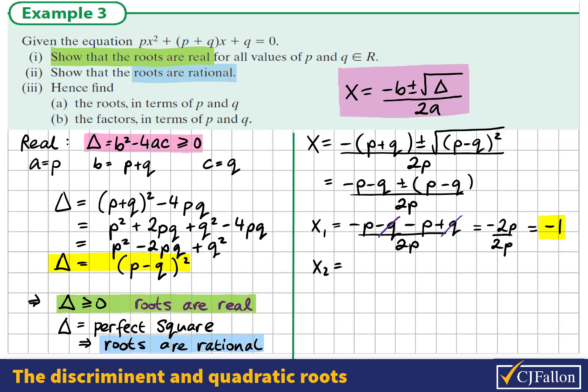The second answer would be the positive one. So we have -p - q + p - q. And here we see that the p's cancel out and we're left with -2q / 2p. And since 2 goes into 2 once, we're just left with -q/p.